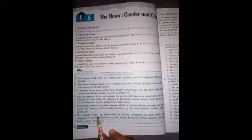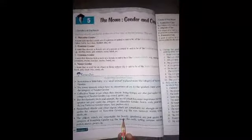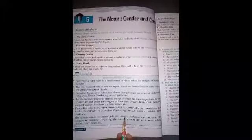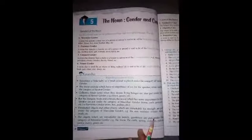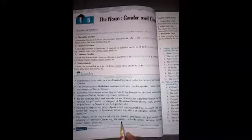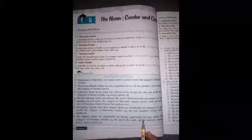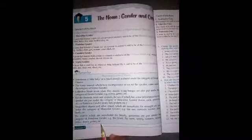The objects which are remarkable for beauty, wo vastu hain jo ki humein sundarta, gentleness, buddhi maani ke liye remark karti hain, sambandh batati hain, are put under the category of feminine gender. Unhein hum feminine gender ke category mein dalte hain. As for example: the moon, the earth, spring, autumn, nature, justice, mercy, peace, etc.